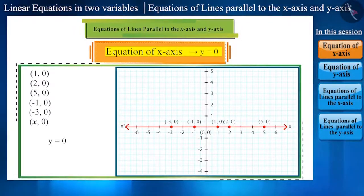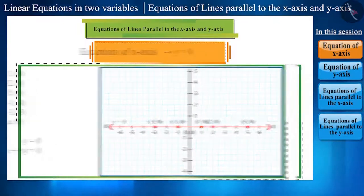x-axis is the line where y is equal to 0. And, this itself is the equation of the x-axis. We can even write it this way: 0 multiplied by x plus 1y is equal to 0.